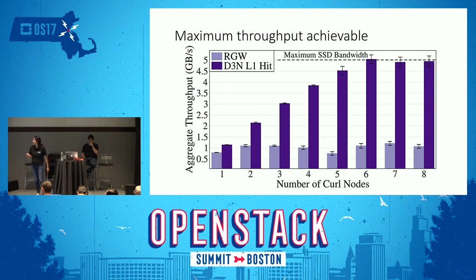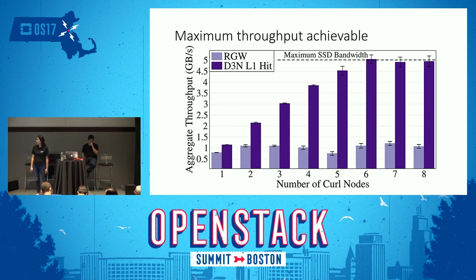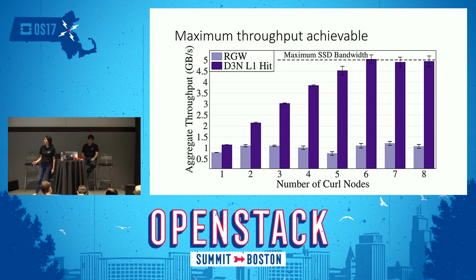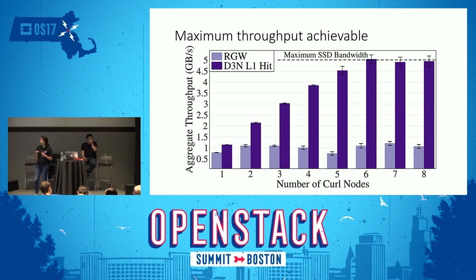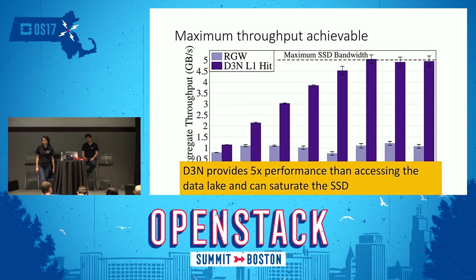We ran a simple curl benchmark to evaluate the performance of our cache implementation. On the x-axis we scale the number of concurrent nodes making requests, and on the y-axis we show aggregated throughput. The light purple bar represents the unmodified Rados gateway — VMs reading data from the data lake. The dark purple bar represents D3N L1 hit performance — VMs reading from rack-local L1 cache. D3N provides up to 5x performance improvement compared to vanilla Rados gateway, and we can saturate the read speed of the SSD.